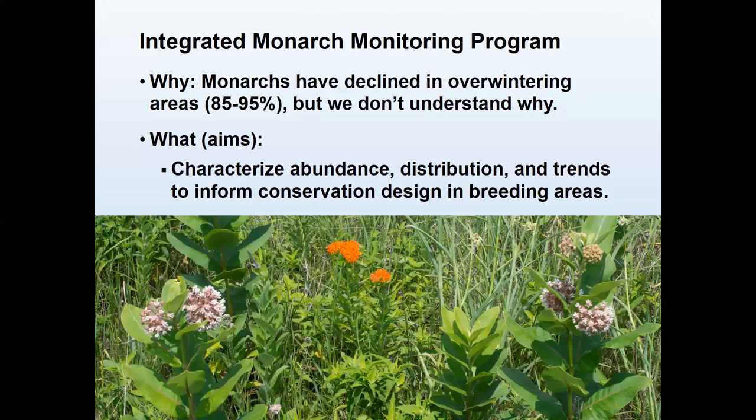We don't really understand why that's the case. The Integrated Monarch Monitoring Program wants to monitor monarchs in the breeding areas, as opposed to the overwintering areas where they've been counted for a number of years — not only to monitor trends, but also to monitor some of the things that might be affecting those trends, such as abundance of milkweeds.